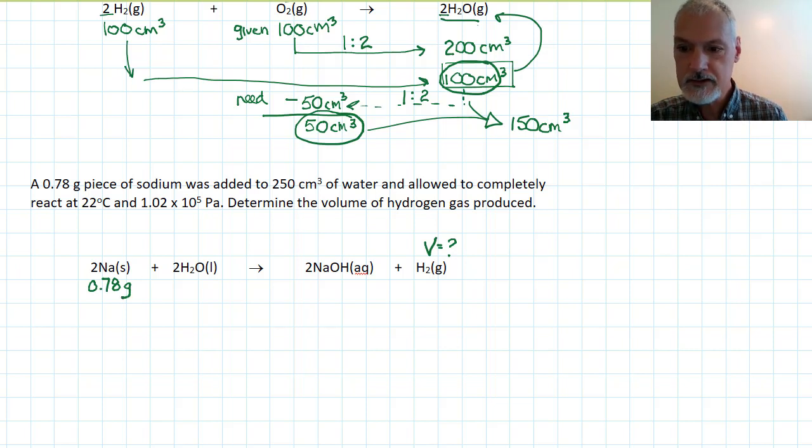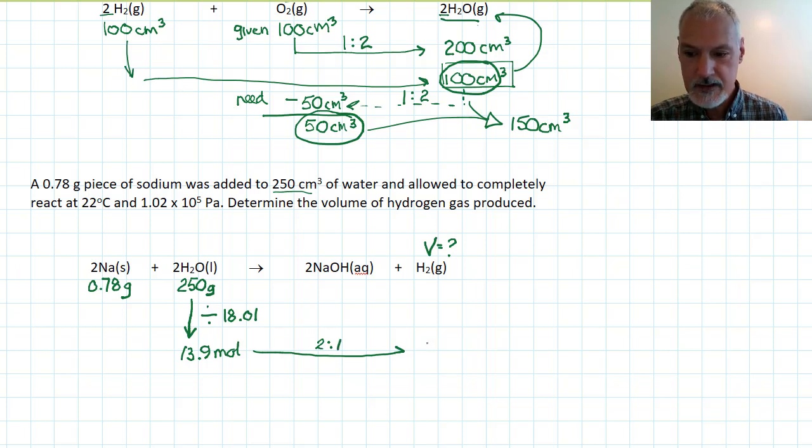We start with some water. Now 250 cubic centimeters of water would weigh 250 grams. So at first glance, this might look a bit like a limiting reagent question. So let's take this information right here and divide that by the molar mass of water. And that gives me 13.9 moles. Which means, if I'm considering hydrogen, the ratio would be 2 to 1. So cut that in half, it's about 6.95 moles.